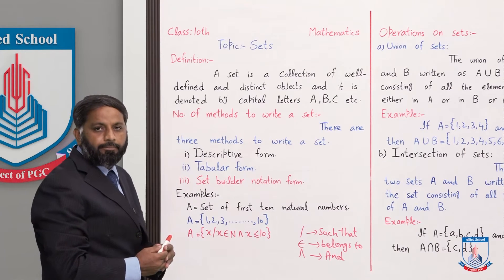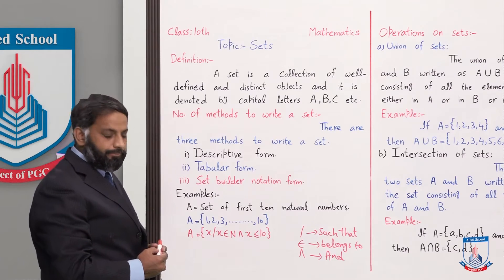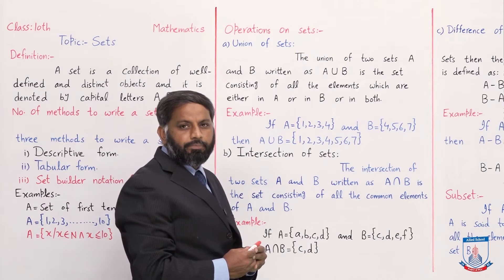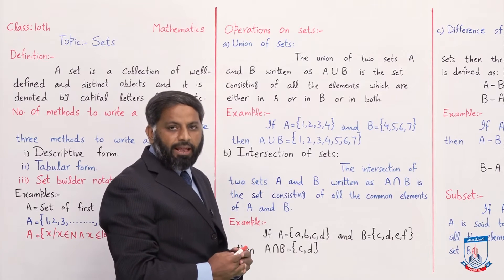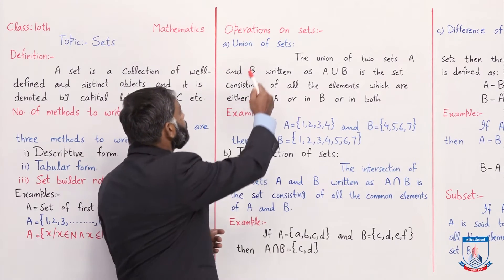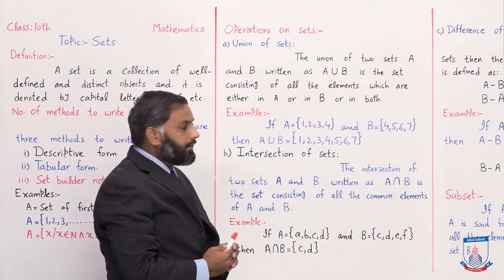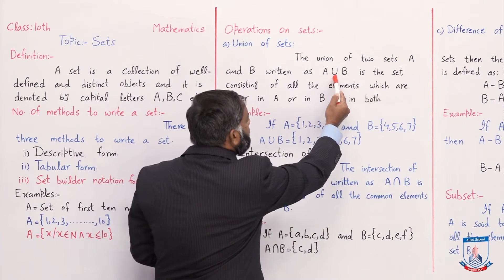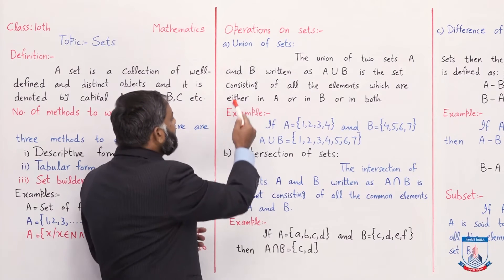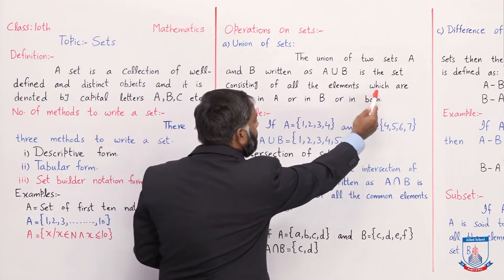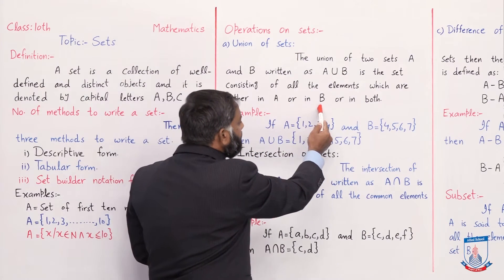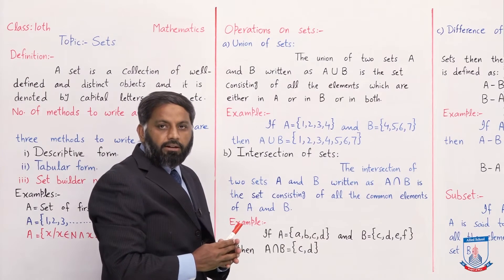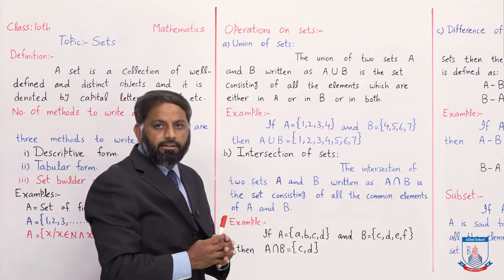Next board پہ چلتے ہیں۔ اب ہم نے operations on sets پڑھنے ہیں — چار types کی operations پڑھیں گے۔ Number one: union of sets۔ The union of two sets A and B, written as A ∪ B, is the set consisting of all the elements which are either in A or in B or in both۔